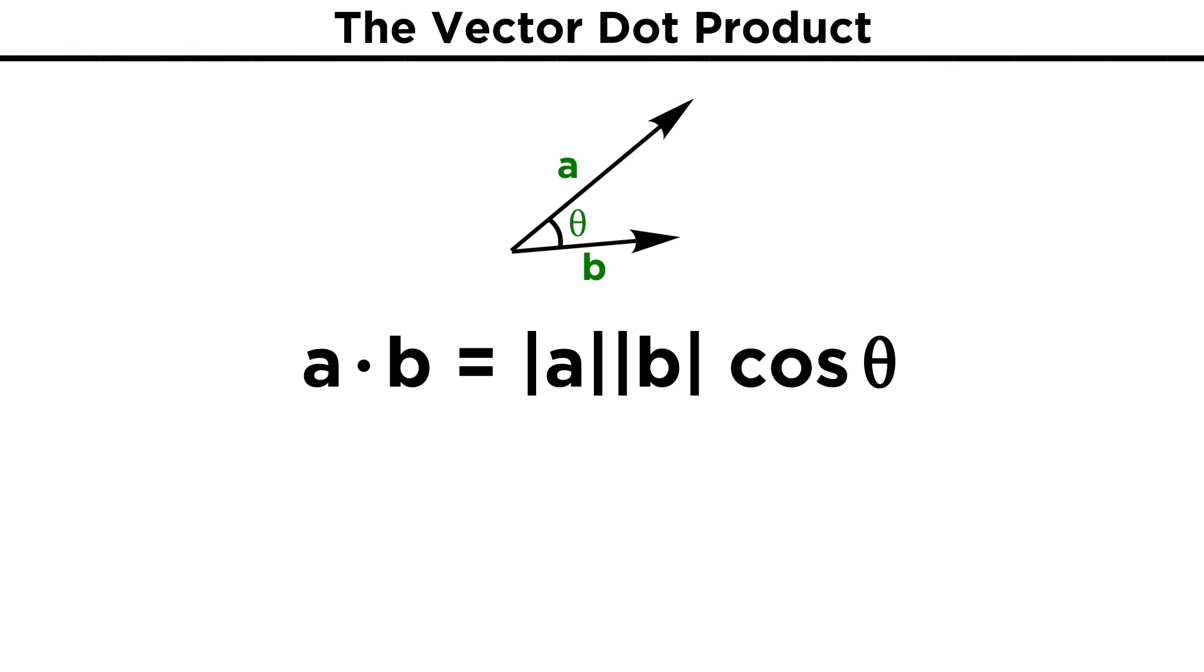The dot product also crops up in an interesting theorem, which says that for two vectors, A and B, A dot B is equal to the length of A times the length of B times the cosine of the angle between them. This means that if we want to calculate the angle between two vectors, we can simply bring these vector lengths to the other side of the equation, and we get cosine theta as being equal to A dot B divided by the product of the vector lengths.